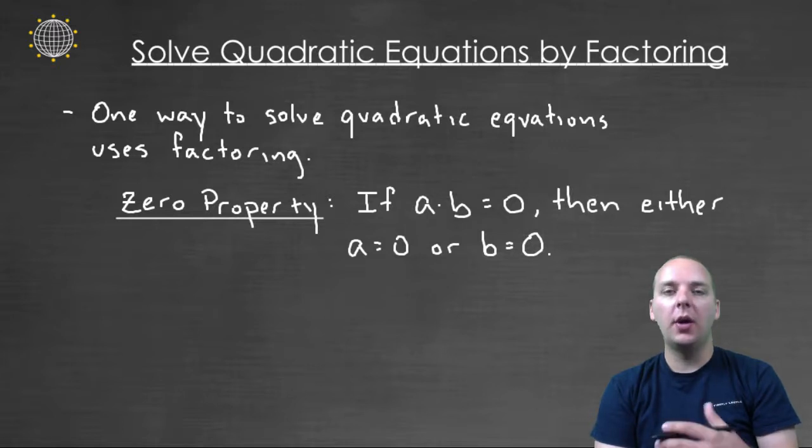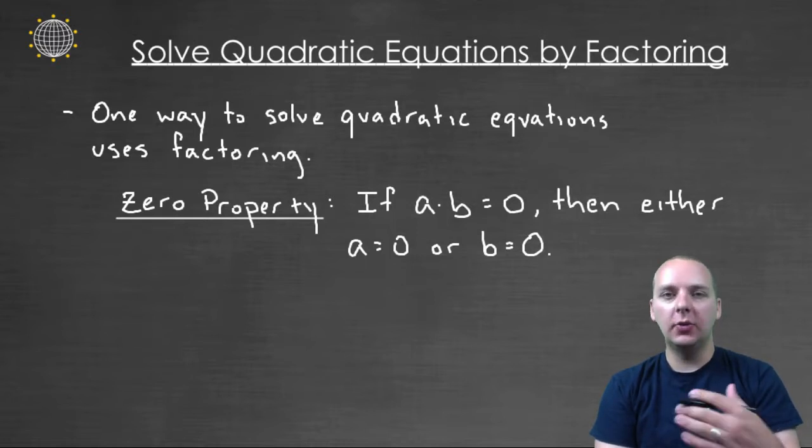The most common way to solve a quadratic equation is to solve it by factoring. And this whole idea, this whole concept, hinges on something called the zero property. And here's what it says.